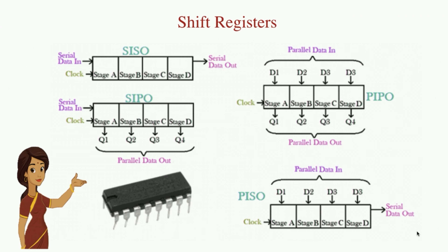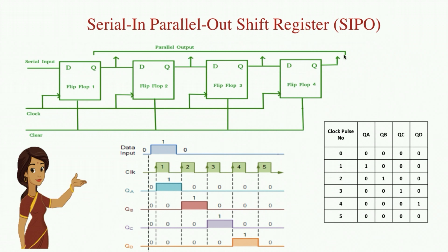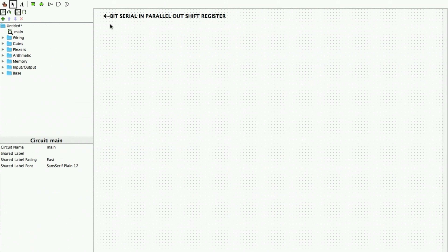Talking about serial in parallel out shift registers, there is serial input — input is sent through one single pin only — whereas the outputs are parallel, so here we have four corresponding output pins. Since we have four flip-flops, you can increase the number of flip-flops and increase the number of output pins available. We will try and implement this diagram using Logisim software and verify the truth table.